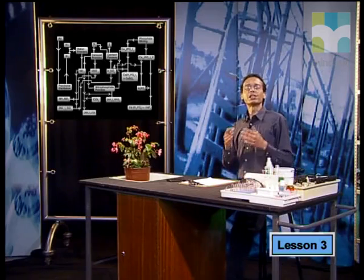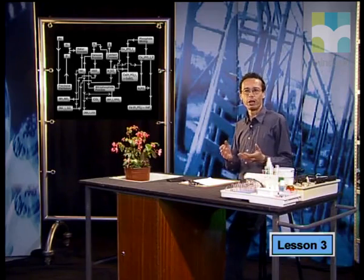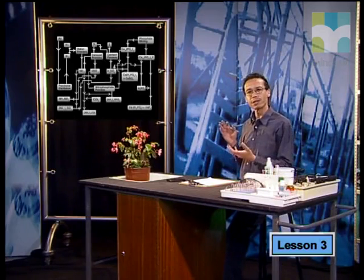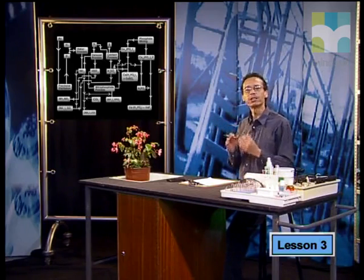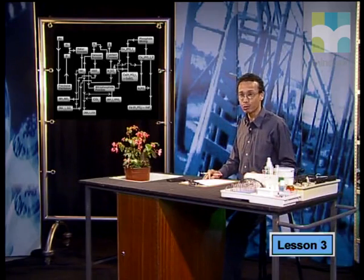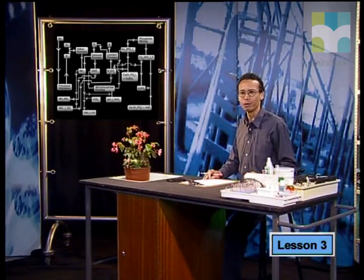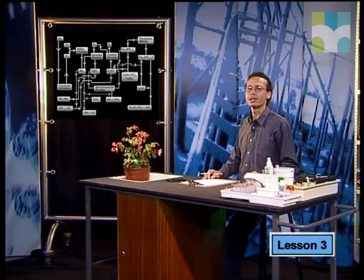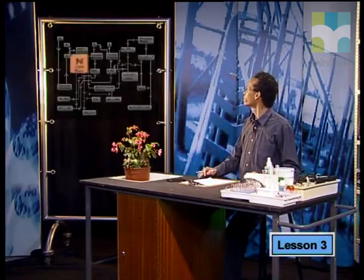A flowchart is a useful way of indicating how different processes link together, and it's a useful tool in learning about the processes involved. Let's begin by examining the first step in the process: the collection of nitrogen.